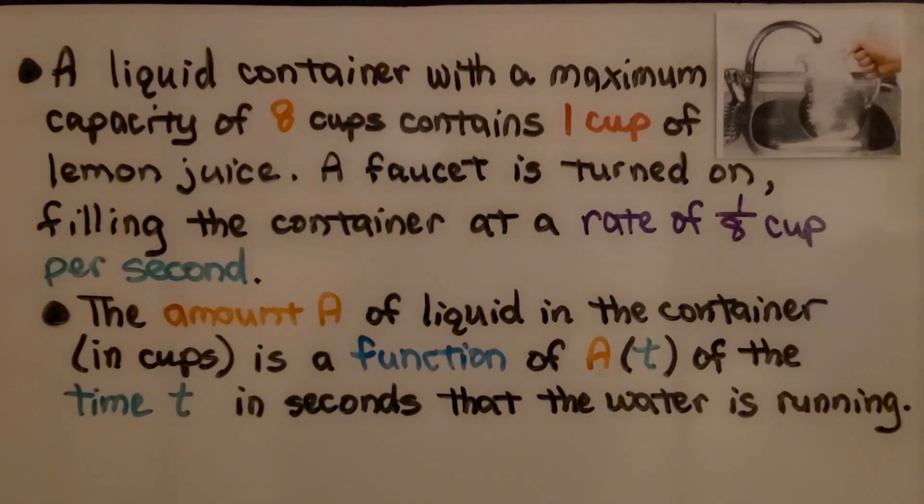A liquid container with a maximum capacity of 8 cups contains 1 cup of lemon juice. A faucet is turned on, filling the container at a rate of 1/8th cup per second. The amount A of liquid in the container in cups is a function A(t) as the time t in seconds that the water is running.